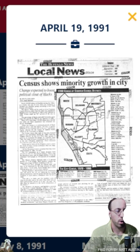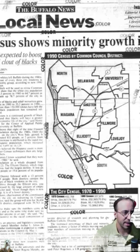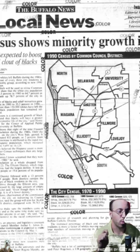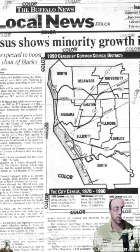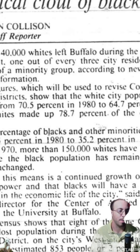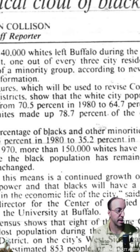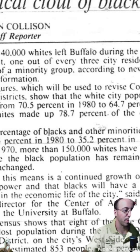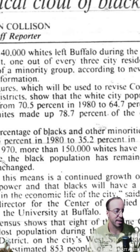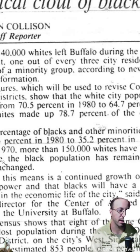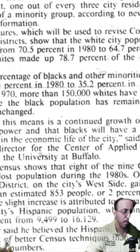In 1991, the reapportionment was based on the 80s census numbers, and some of those numbers are pretty staggering. One of the big takeaways in the 1990 reapportionment was the demographic change the city saw over the 80s. The white city population dropped from 70.5% in 1980 to 64.7% in 1990, and whites had made up 78.7% in the 1970s. Between 1970 and 1990, more than 150,000 whites left the city while the black population remained relatively unchanged.